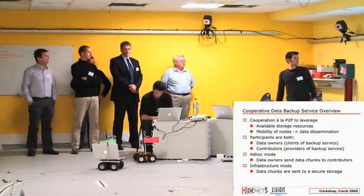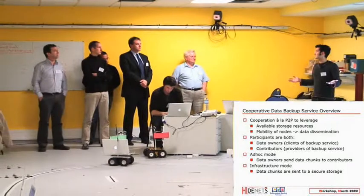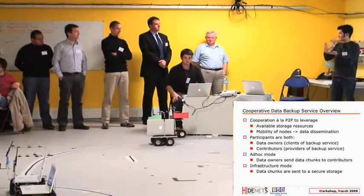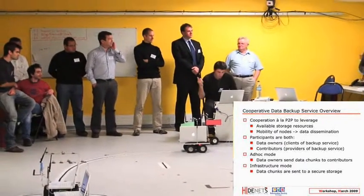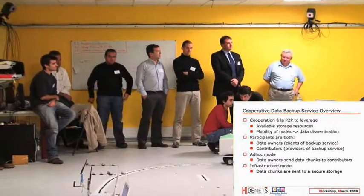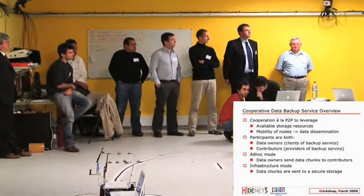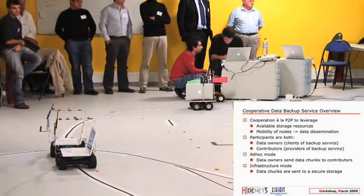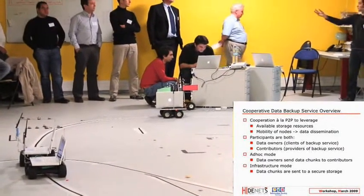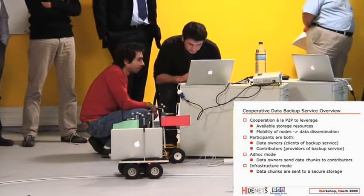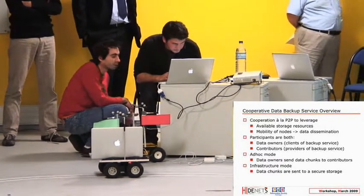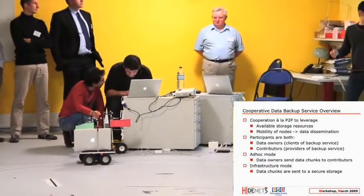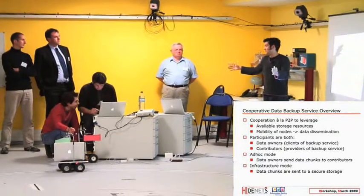The cooperative data backup works like a peer-to-peer resource sharing network. Every node acts as both a client and a server. The client side, which we call the data owner side, gathers the data the application needs to back up and distributes it among available resources in its vicinity. In exchange, it contributes to the service by storing data for neighboring cars. It works both in ad hoc mode — where cars traveling around save chunks of data for each other — and when connected to an infrastructure, where they can release all the data to a secure server.